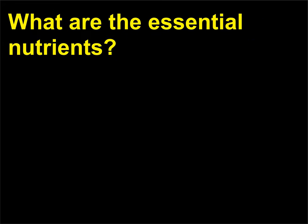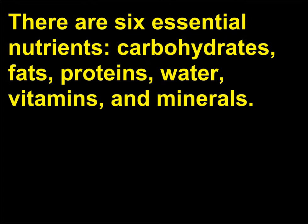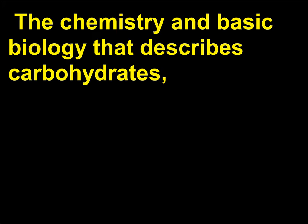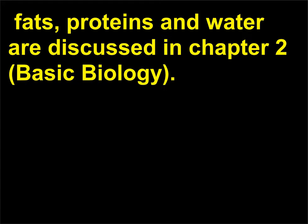What are the essential nutrients? There are six essential nutrients: carbohydrates, fats, proteins, water, vitamins, and minerals. The chemistry and basic biology that describes carbohydrates, fats, proteins, and water are discussed in Chapter 2, Basic Biology.